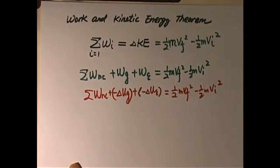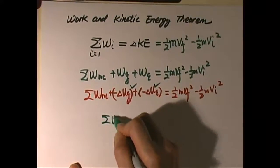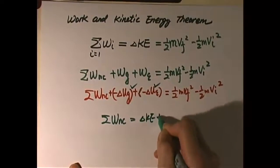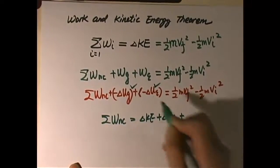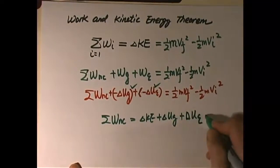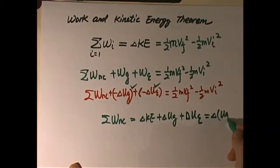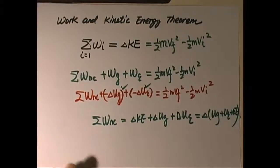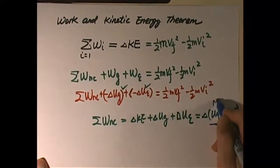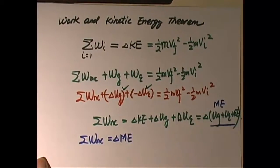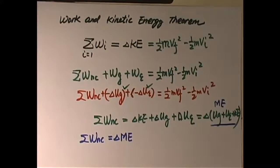Let's move those two terms to the right side. All we have is work done by all non-conservative forces equals delta KE plus delta U-gravitational plus delta U-elastic. We can combine these as delta of (U-gravitational + U-elastic + KE). We define gravitational potential plus elastic potential plus kinetic energy as mechanical energy.